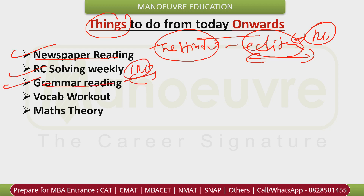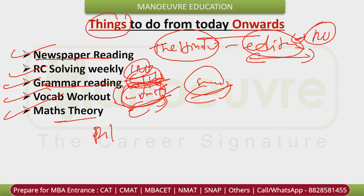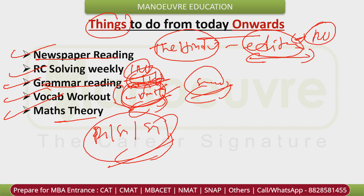For basic grammar, watch the videos from the Manual dashboard — handouts are available there. For vocabulary, Word Power Made Easy — you can watch videos from the dashboard or buy the book for 100 to 150 rupees; please order it and do this book. For maths, start with basic theory: Percentage, Simplification, and Speed Maths. These three topics plus basic concepts in all other topics should be clear.